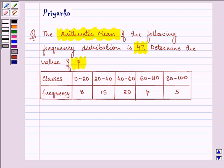Here we are given the classes as 0 to 20, 20 to 40, 40 to 60, 60 to 80 and 80 to 100. And their respective frequencies are 8, 15, 20, P, and 5.